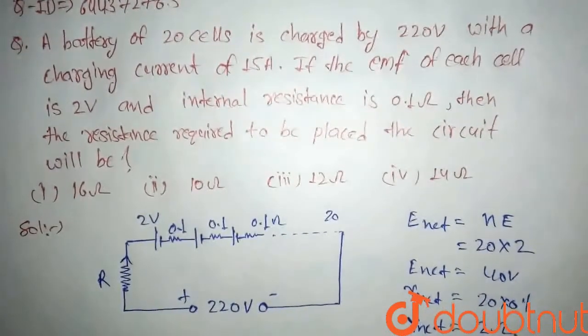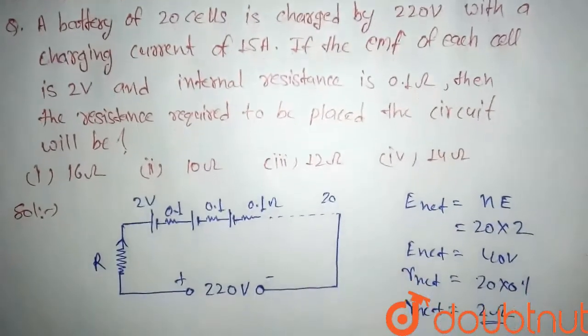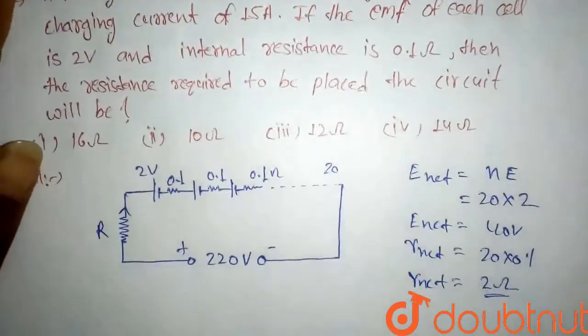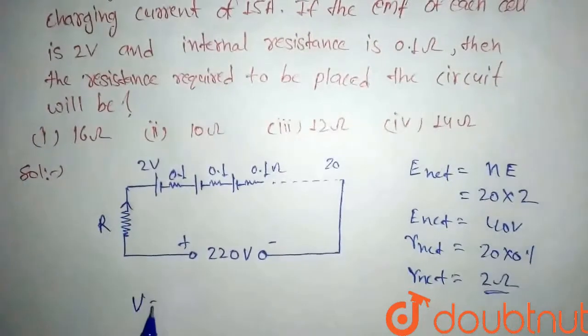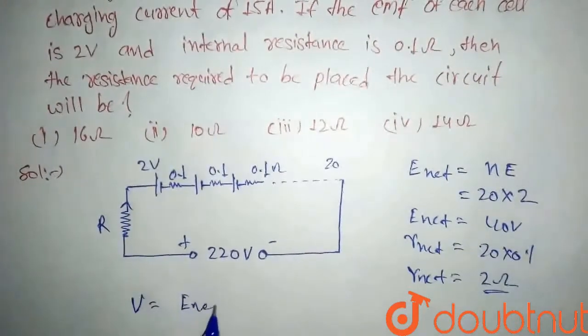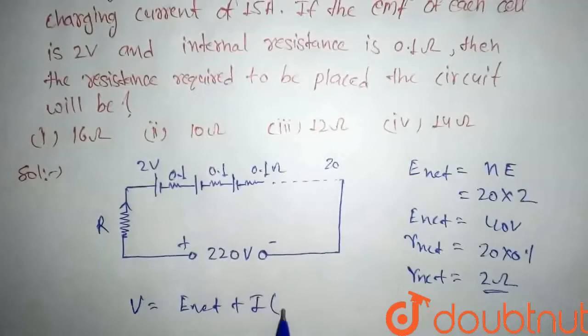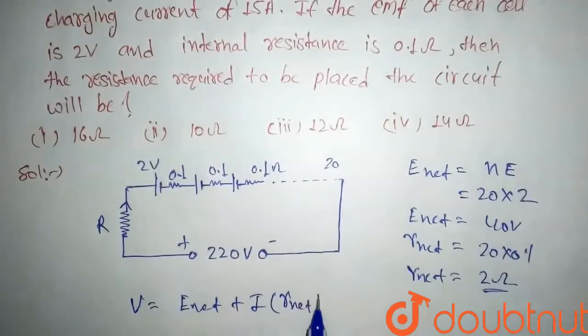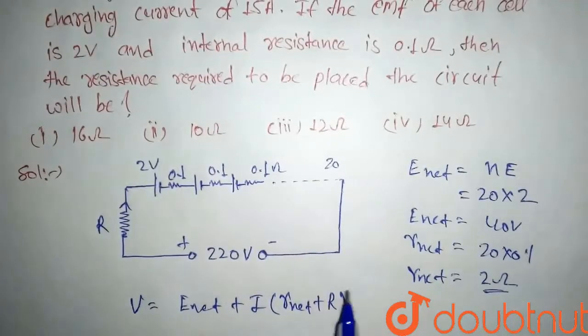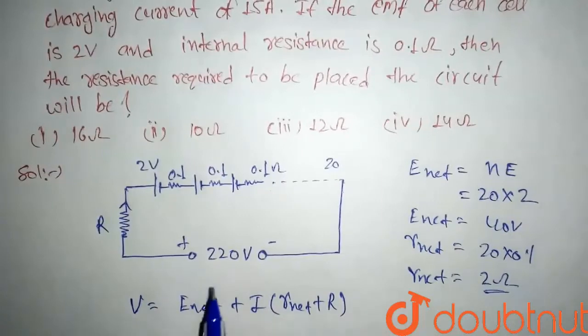So here if we apply KVL, we will see that V equals E_net plus I times (r_net plus R). Here we have to find capital R. So V is 220 volts, so 220 equals 40 plus 15 times (2 plus R).